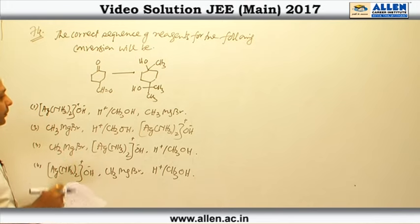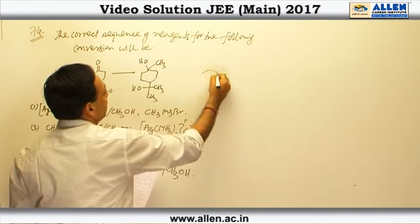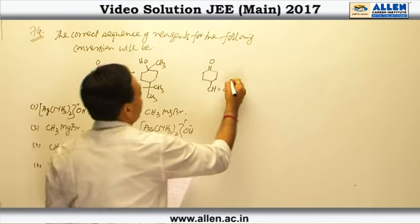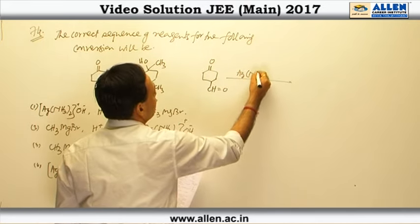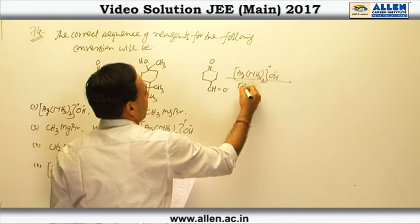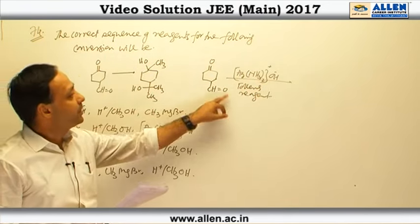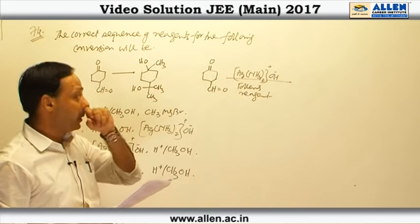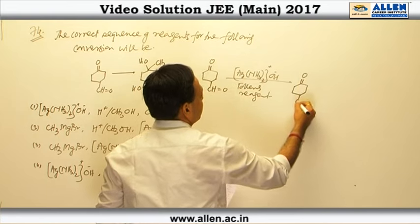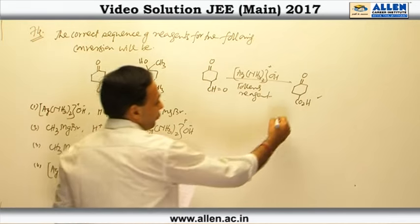Let us determine which option is correct. First, if we react this compound with Ag(NH₃)₂⁺ OH⁻, which is called Tollens reagent — as we all know, Tollens reagent cannot oxidize a ketone, but it will oxidize the aldehyde. So the product will be C=O and CO₂H (carboxylic acid). This is the first step.